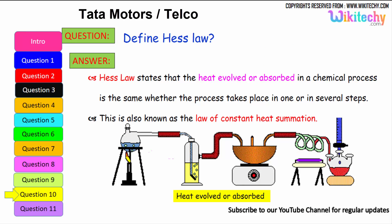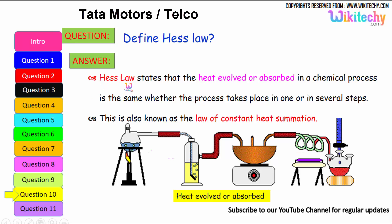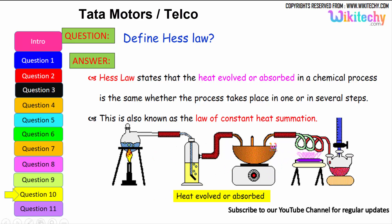Define Hess's Law. In the case of generating heat between an object and its emissions, Hess's Law states that the heat evolved or absorbed in a chemical process is the same whether the process takes place in one or in several steps. This is also known as the law of constant heat summation.